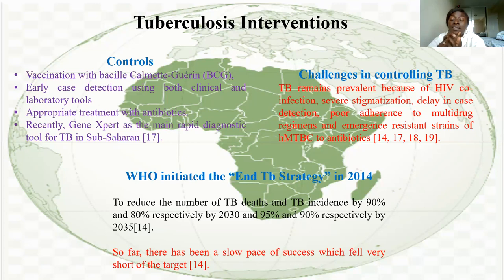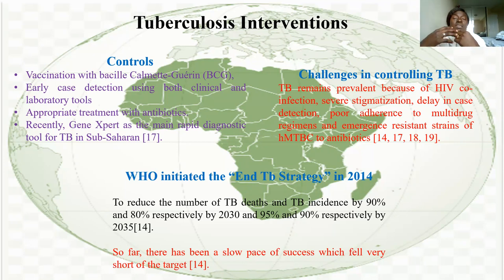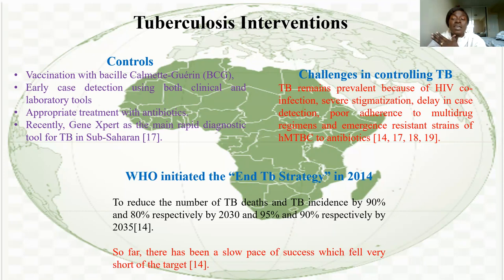Interventions for tuberculosis include BCG vaccination given at birth, early case detection using clinical and laboratory tools, treatment with appropriate antibiotics, and GeneXpert as a rapid diagnosis tool for TB in sub-Saharan Africa. Challenges in controlling TB include co-infection with HIV, social stigma causing people to avoid TB patients, delays in case identification, poor drug adherence, and the emergence of antibiotic-resistant strains of tuberculosis.